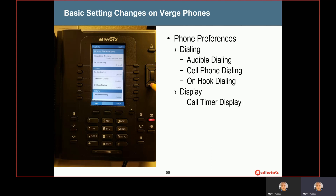On hook dialing is enabled by default, which means if you're at an idle phone and you start typing numbers, the speakerphone will automatically come on. If you disable that, you would actually have to either lift the receiver or press the speakerphone button in order to start dialing. Under the next section — display — the call timer display shows the length of time that you've been on a phone call when you're on one. It's enabled by default, but you could disable that if you wanted to.